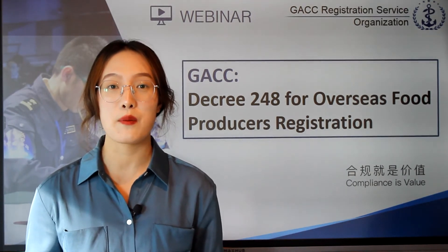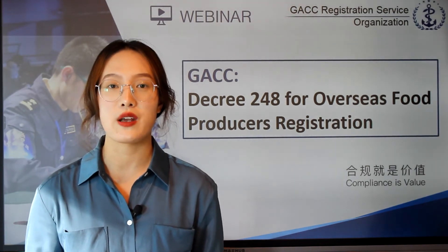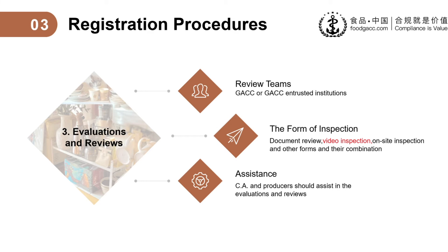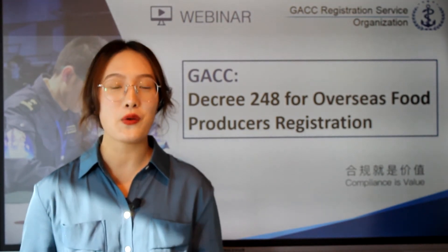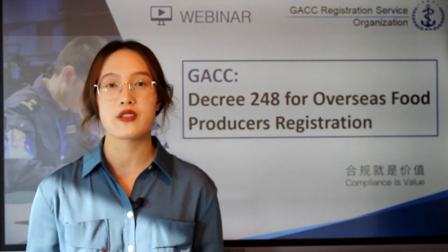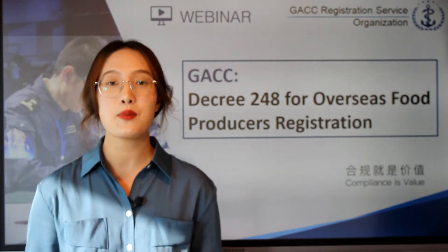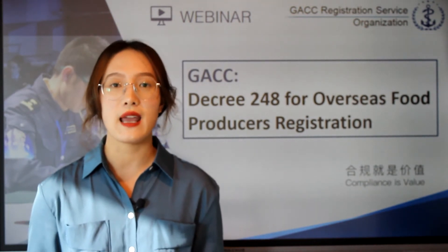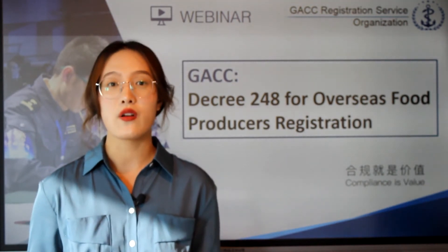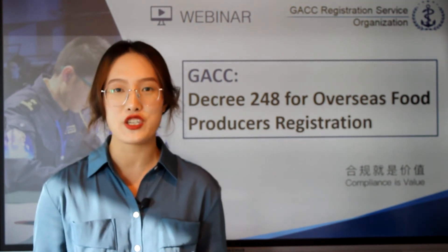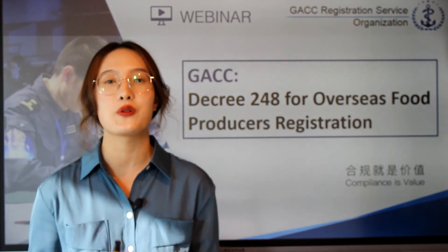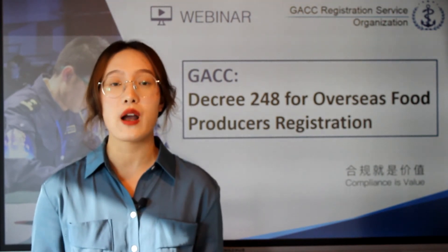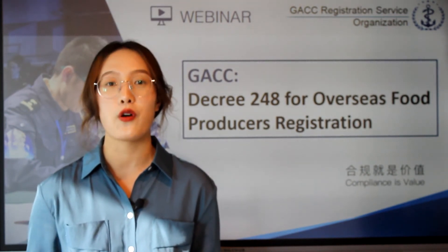The new inspection methods are more flexible and applicable in the current situation. The competent authorities or the overseas producers shall assist in the evaluations and reviews. If you meet the requirements of the evaluation and review, GACC will register you, grant you a registration number in China, and notify yourself or your CA in writing. If you don't meet the requirements, GACC will deny your registration and notify yourself or your CA in writing.